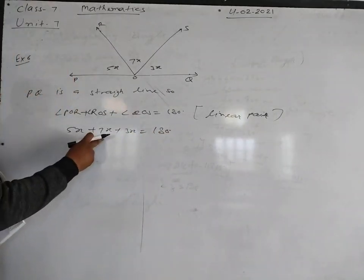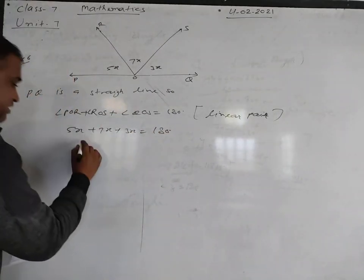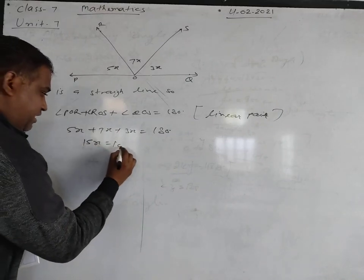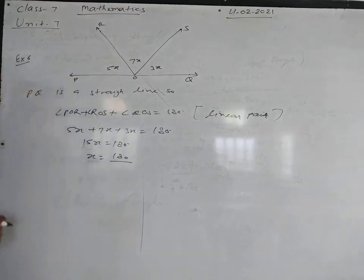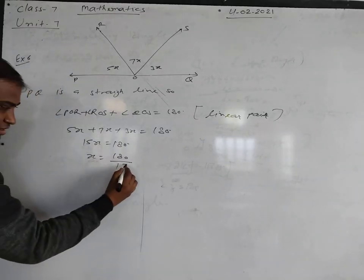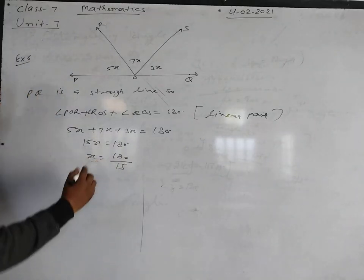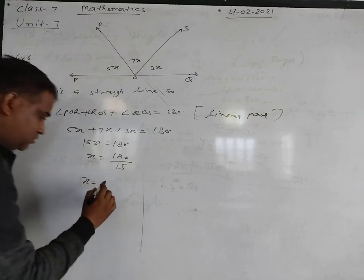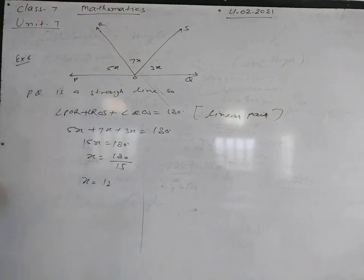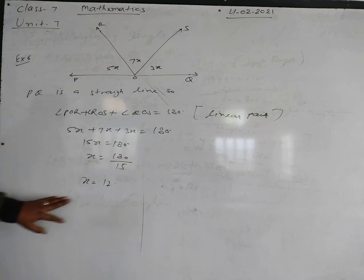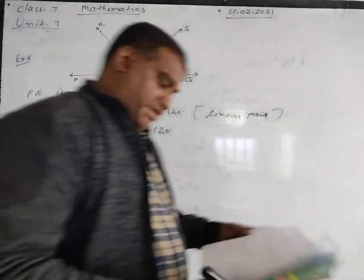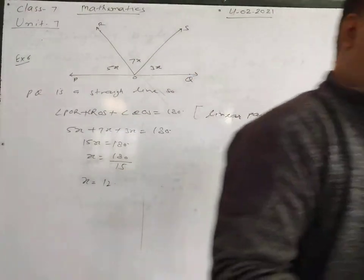5x plus 7x equals 12x, and 12x plus 3x equals 15x. So 15x is equal to 180 degrees, therefore x is equal to 180 divided by 15, which gives x equal to 12 degrees. So the value of x is equal to 12 degrees.